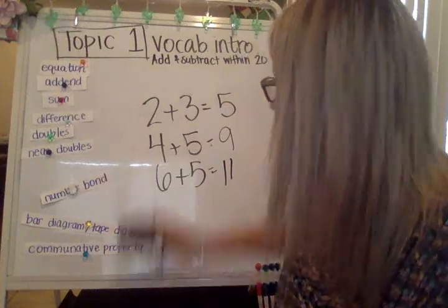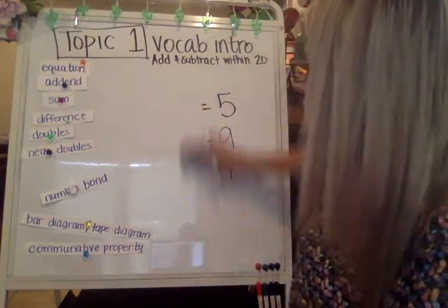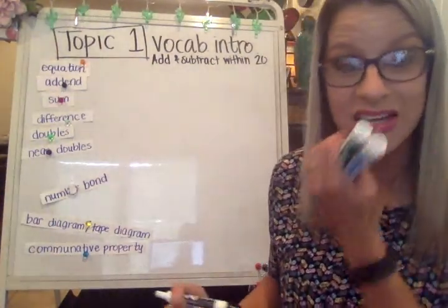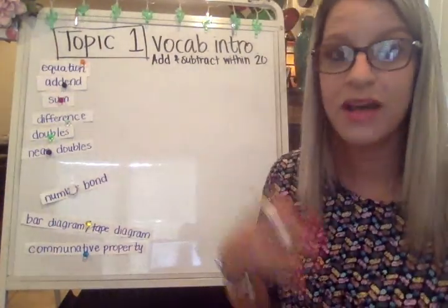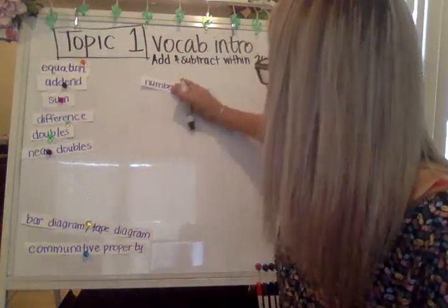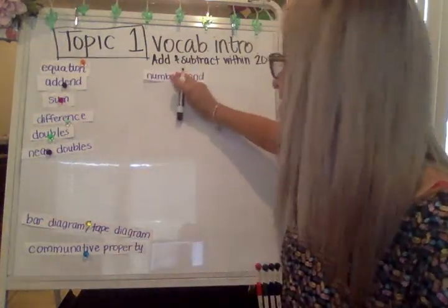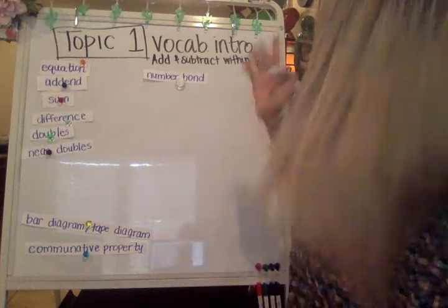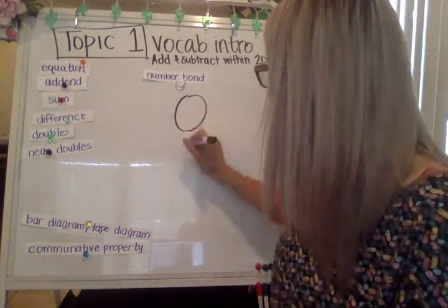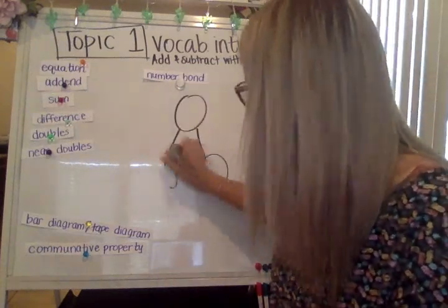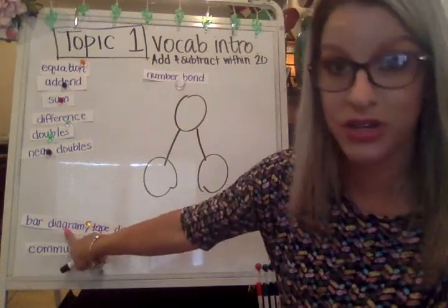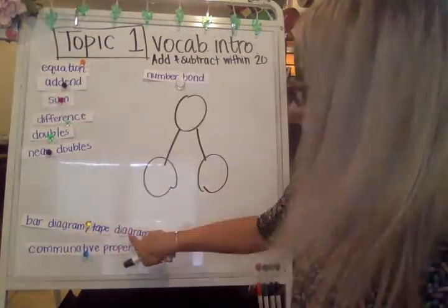The next thing I want to talk about is number bonds. This math curriculum doesn't necessarily talk about number bonds a whole lot, but having this background knowledge that you've already learned is going to be really helpful. A number bond — just to remind you — they look like this. They're going to be very similar to the bar diagrams and tape diagrams that we're going to talk about in just a second.